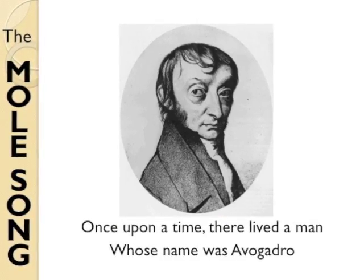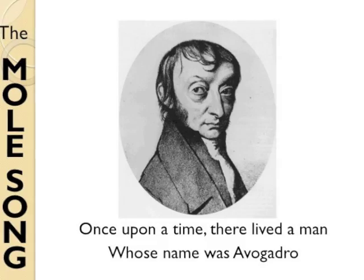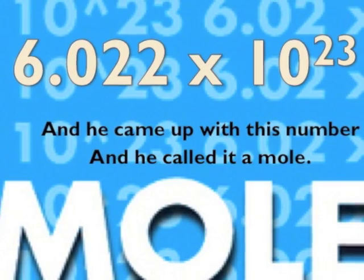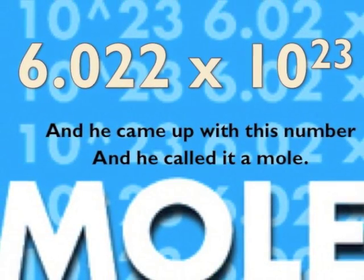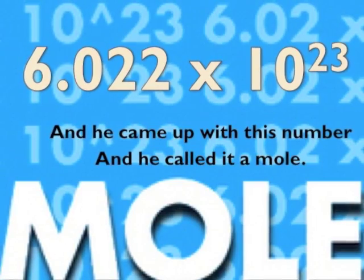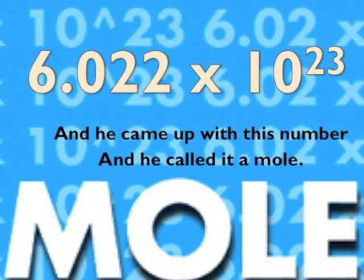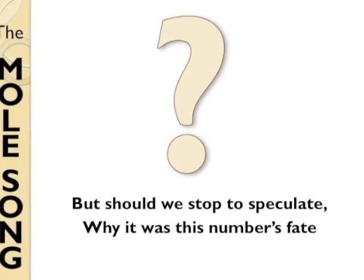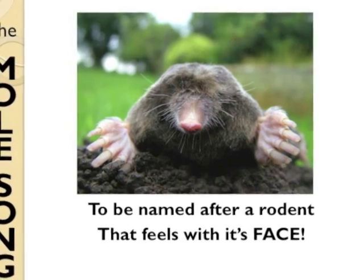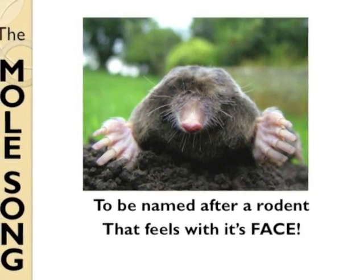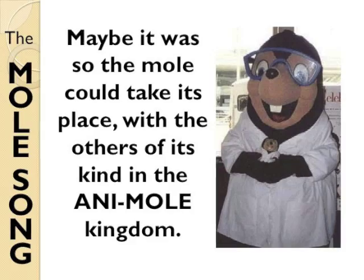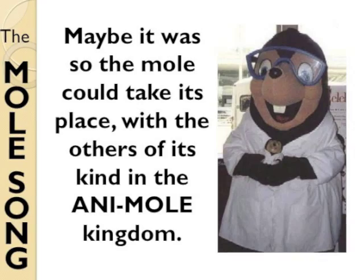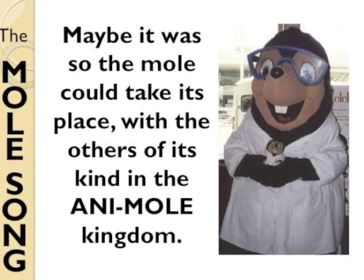Once upon a time, there lived a man whose name was Avogadro, and he came up with this number and he called it a mole: 6.022 times 10 to the 23rd. But should we stop to speculate why it was this number's fate to be named after a rodent that fuels with its face? Maybe it was so a mole could take its place with the others of its kind in the animal kingdom.